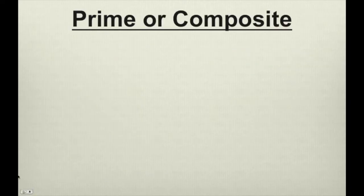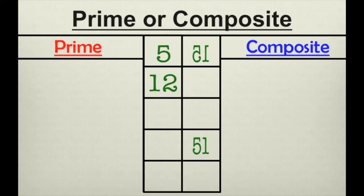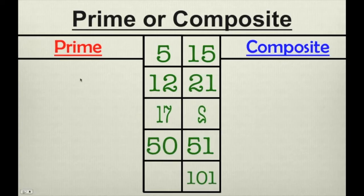Now, here's where it gets a little tricky. We've discussed what prime numbers are. We've discussed what composite numbers are. But can you tell them apart if you have to pick? So let's take a look at some of these numbers.